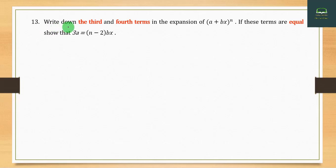Problem 13: Write down the third and fourth terms in the expansion of (a + by)ⁿ. If these terms are equal, show that 3a = (n - 2)b.